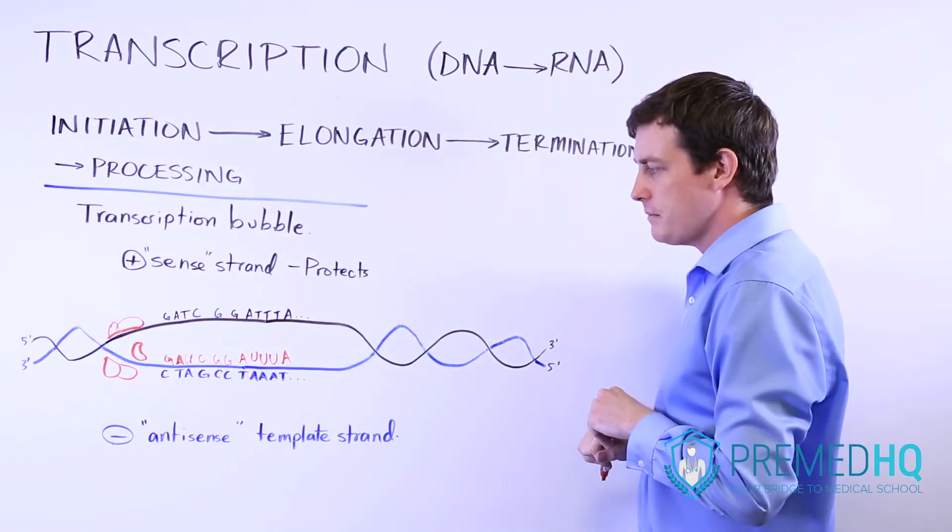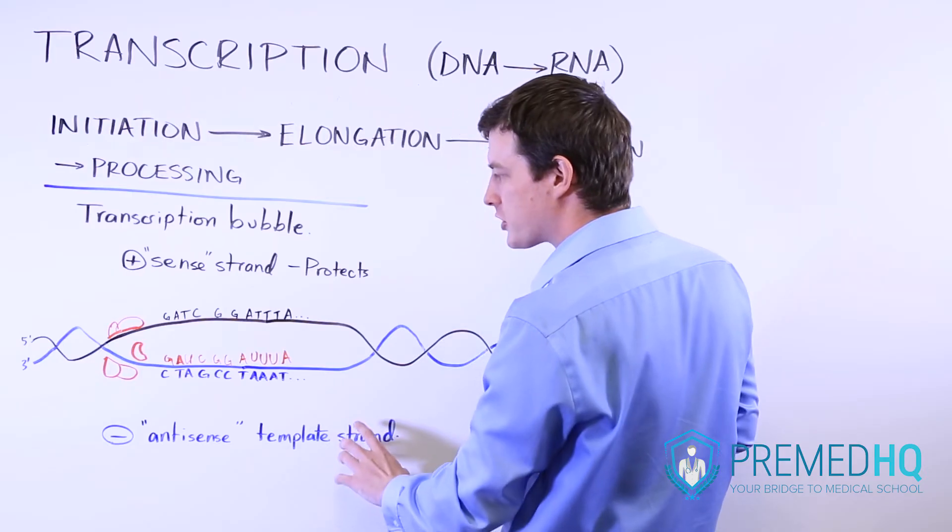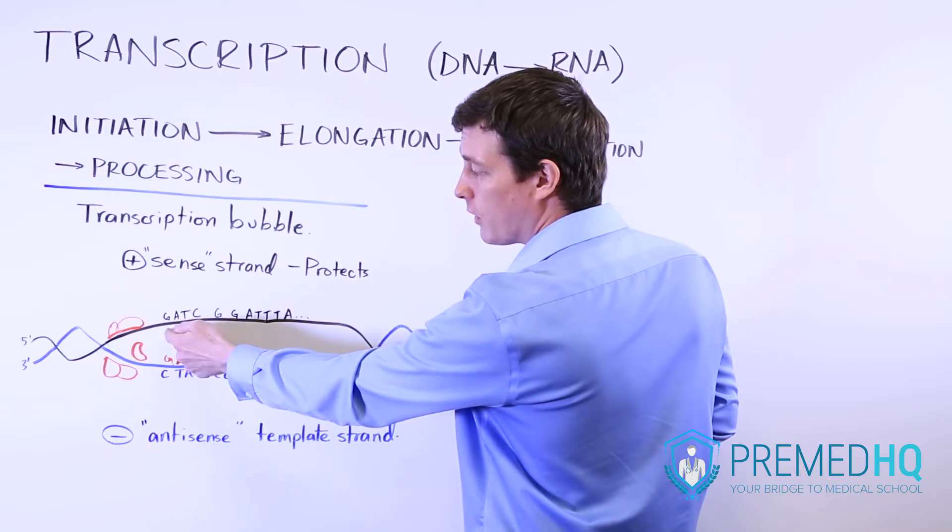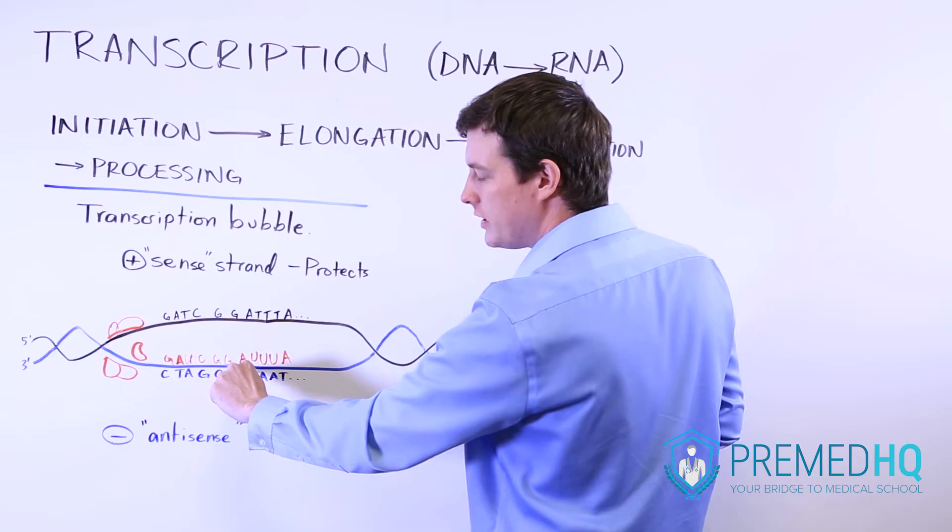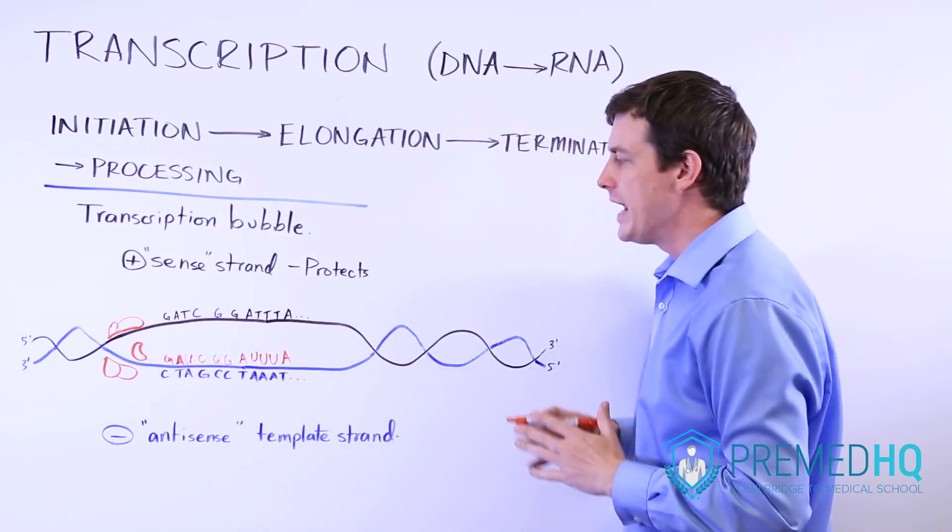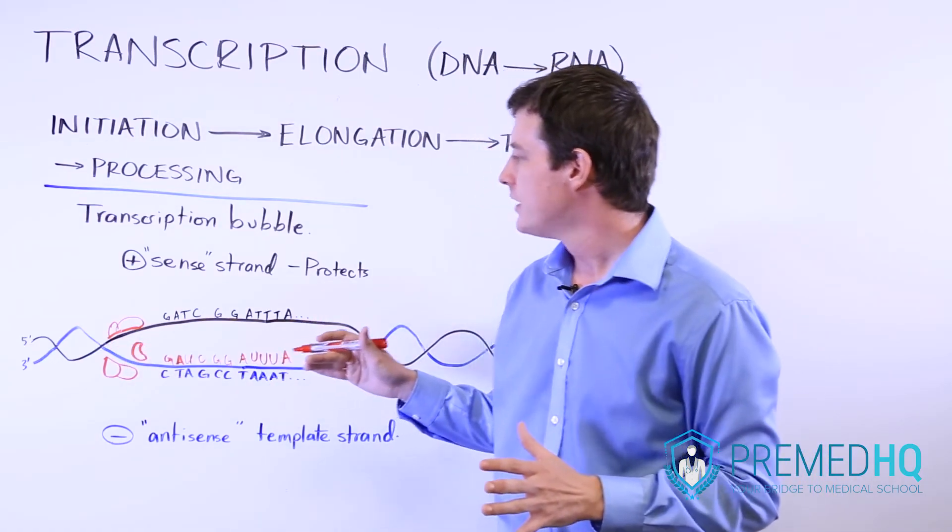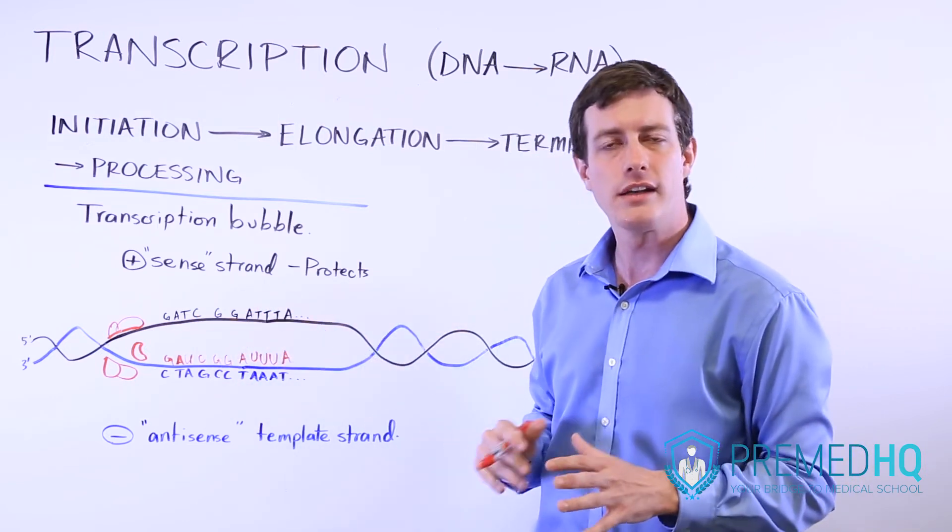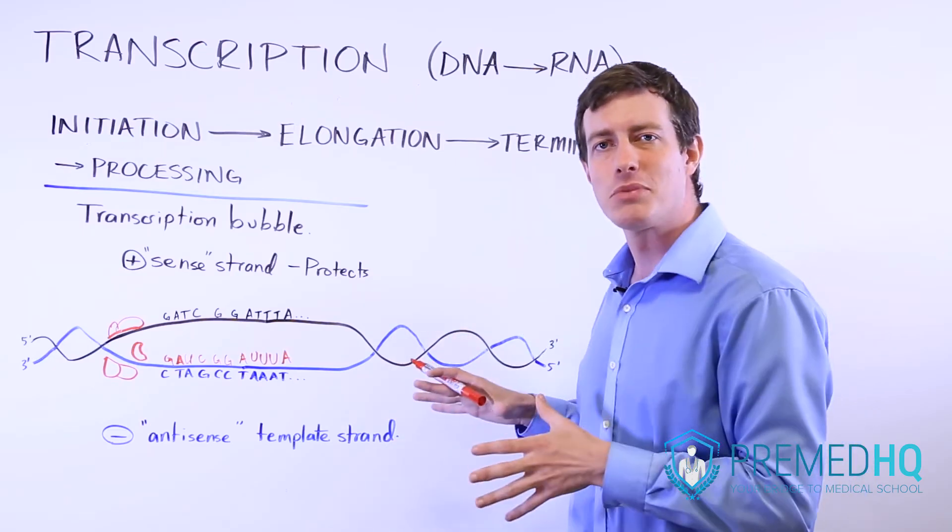And what you'll notice here is that, yes, this is serving as the template, but the structure actually highly resembles this one. We have a GAUC here, whereas we had a GATC like that. Then we have two G's, we have two G's here. And that will later be processed and used to make the proteins in the translation process.